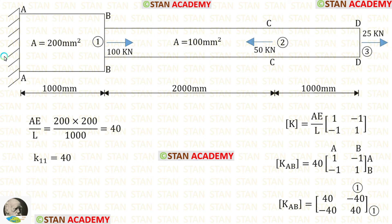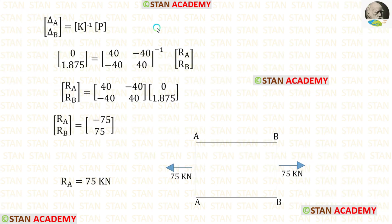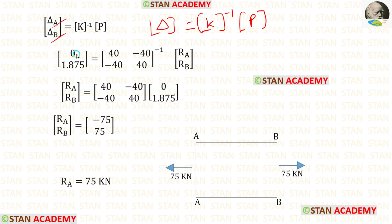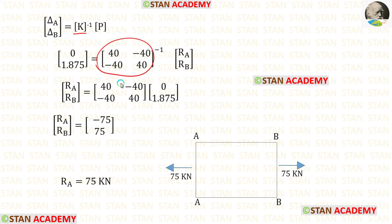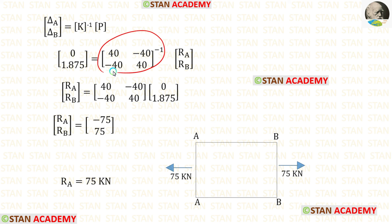Now we are going to find the reaction at the fixed end. For AB we have already made the element stiffness matrix, and to find the reaction we are going to use this matrix. We know the formula: delta matrix equals K matrix inverse into P matrix. In bar AB we have delta A and delta B. Delta A is 0 and delta B is 1.875. Let us apply the matrix made for AB. In the P matrix we have to enter RA and RB. Taking the stiffness matrix to the other side removes the inverse. After multiplying these two matrices, we get RA equal to minus 75, meaning it is acting towards the left side.